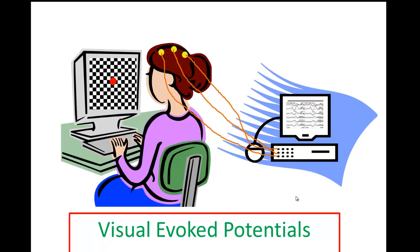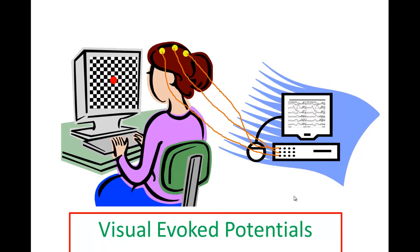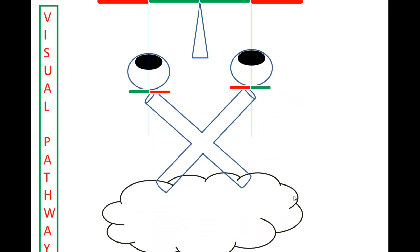Before you really understand visual evoked potentials, you need to revise and refresh your memory about the visual pathways. Looking at this cartoon, imagine this is the right eyeball and this is the left eyeball — you are looking at this person from the top, this is the nose. When you look at the visual field, divide it into two sections: two horizontal sections.